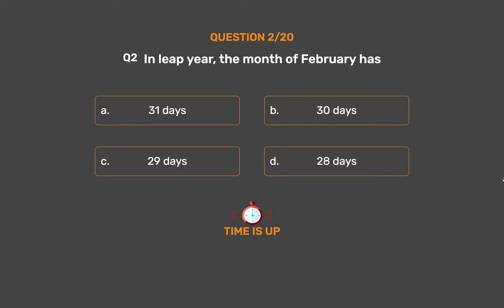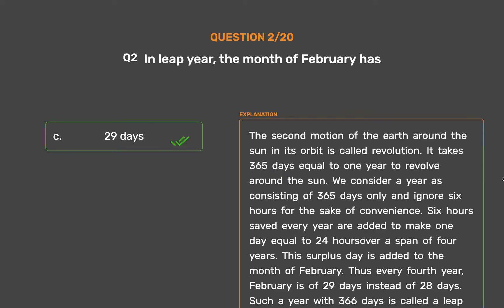The correct answer is Option C: 29 days. It takes 365 days, equal to one year, to revolve around the sun. We consider a year as 365 days and ignore 6 hours. Those 6 hours saved every year are added to make one extra day over a span of 4 years. This surplus day is added to February, making it 29 days — a leap year with 366 days.